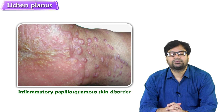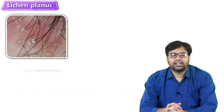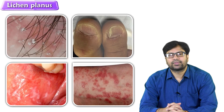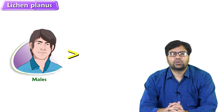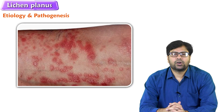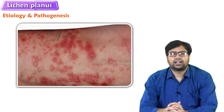Definition-wise, it is an inflammatory papulosquamous skin disorder. It can affect any part of the body like hair, nails, oral mucosa, and skin. The incidence is less than 1%, and males are affected more than females.